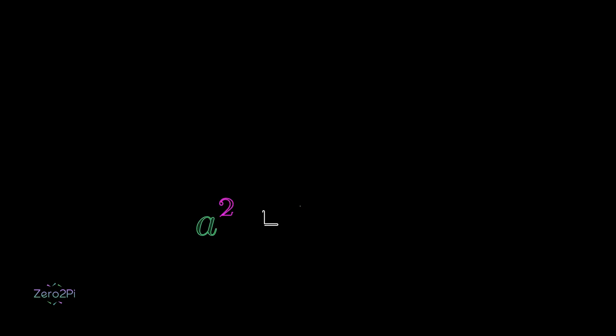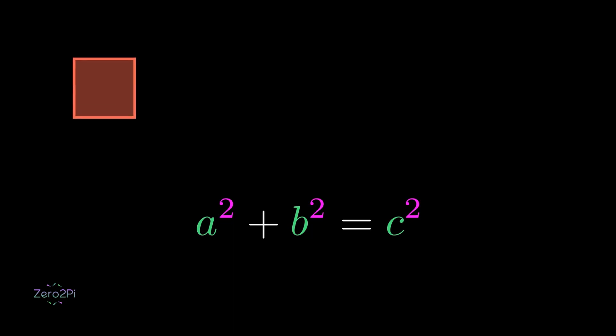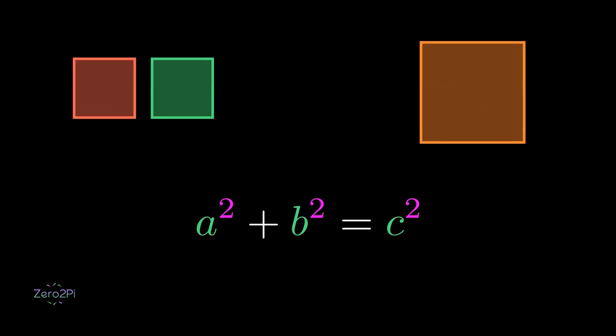Hi, you have probably seen this formula — the Pythagorean formula. A small square plus another small square is equal to a much larger square, but I have something interesting to share.